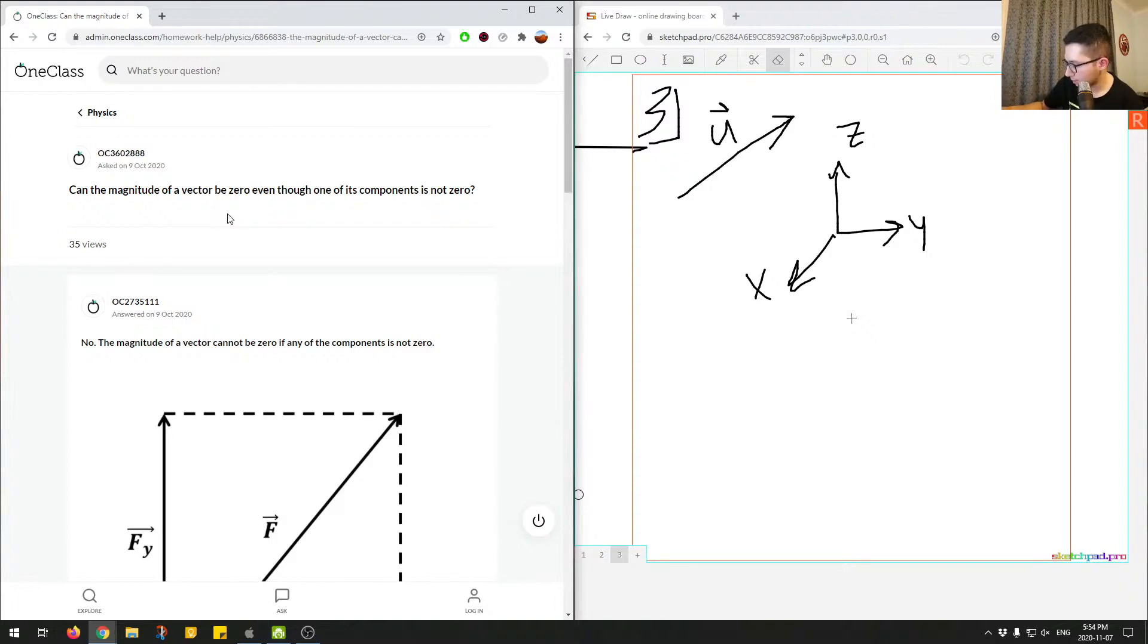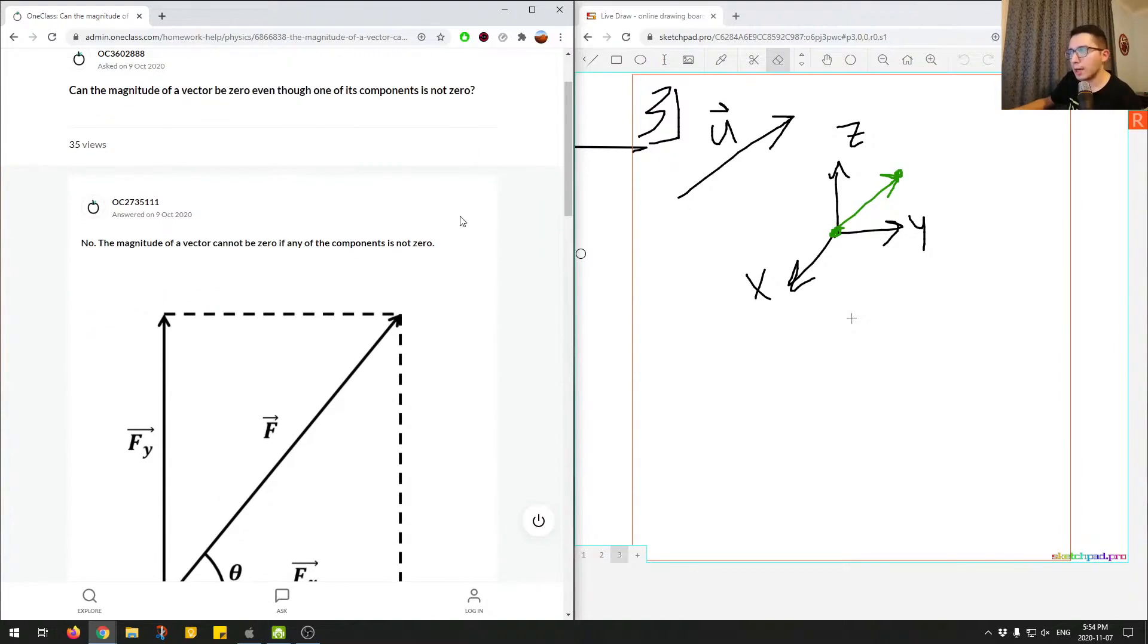So you can think of a vector as kind of in a 3D coordinate system, some kind of vector like that, pointing to this point in space. So let's just go through the logic of what the answer said.